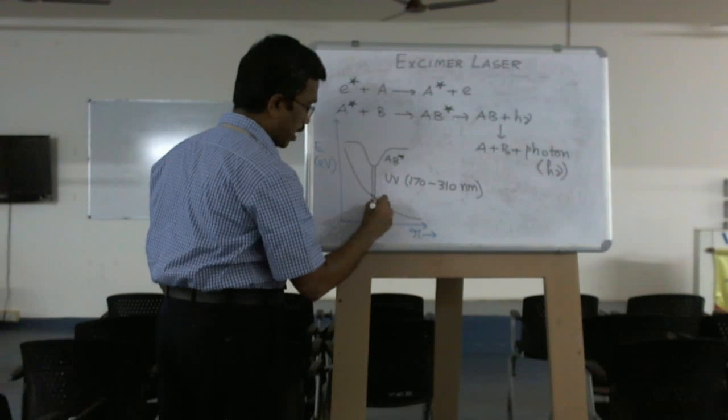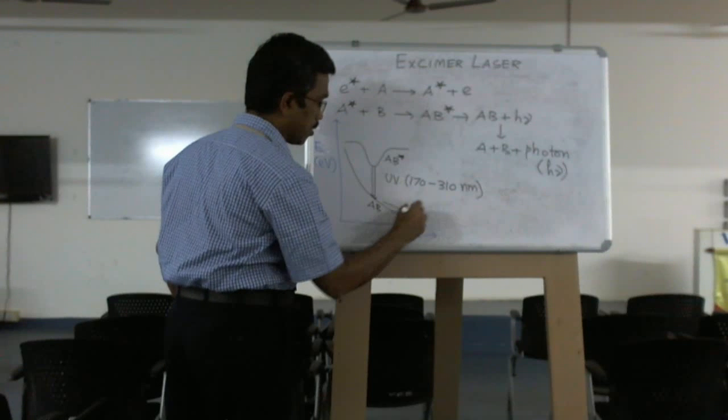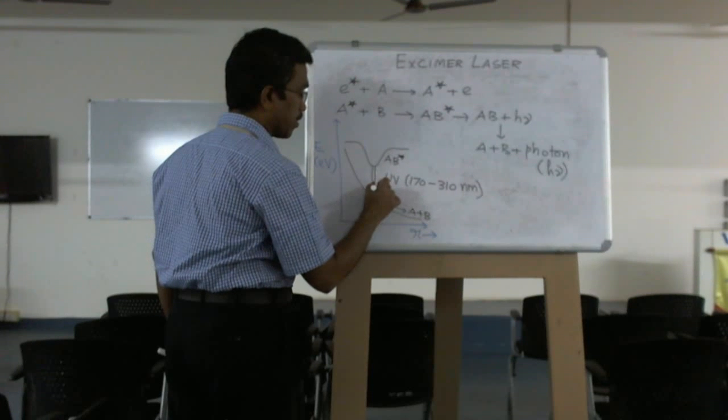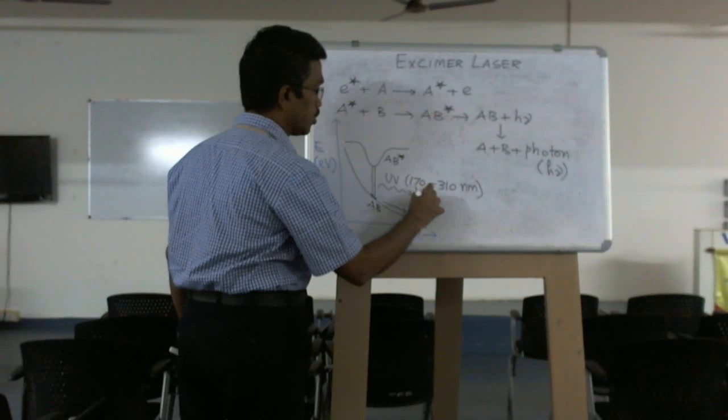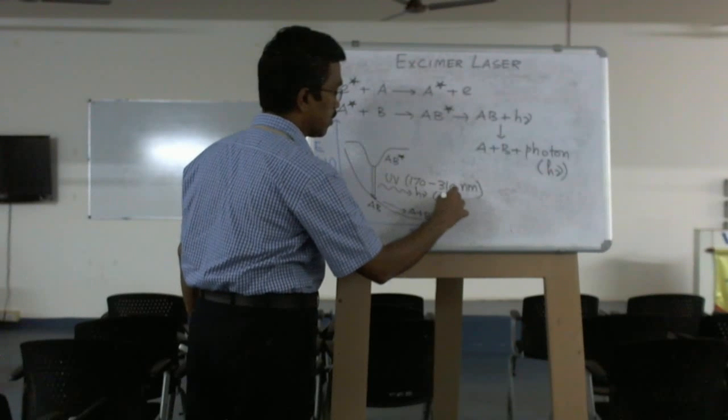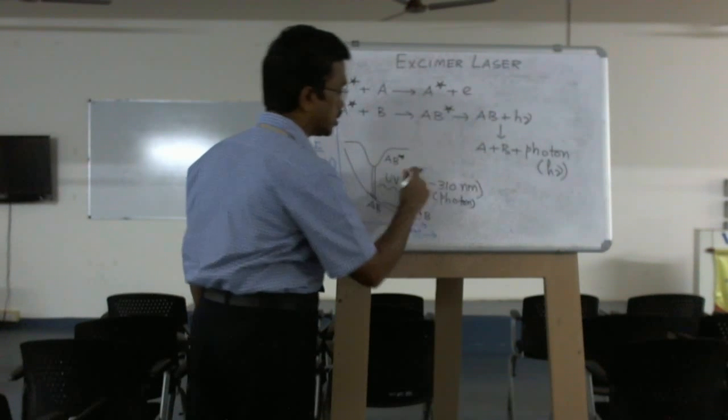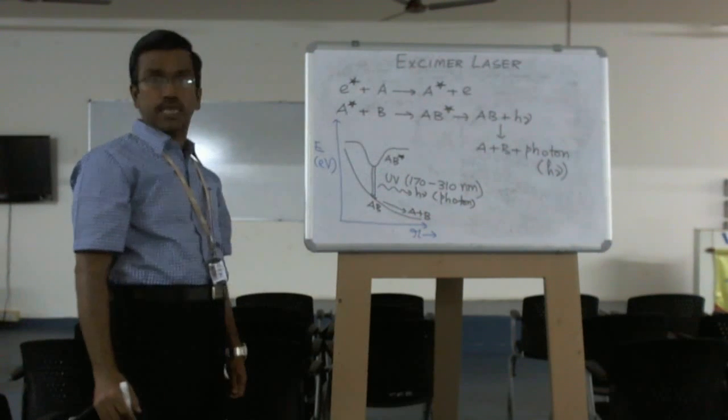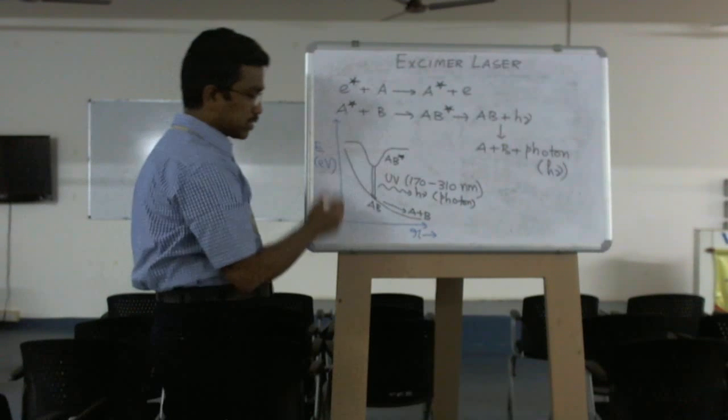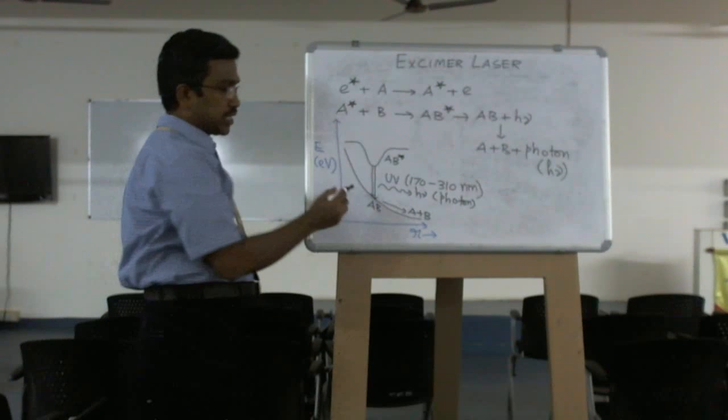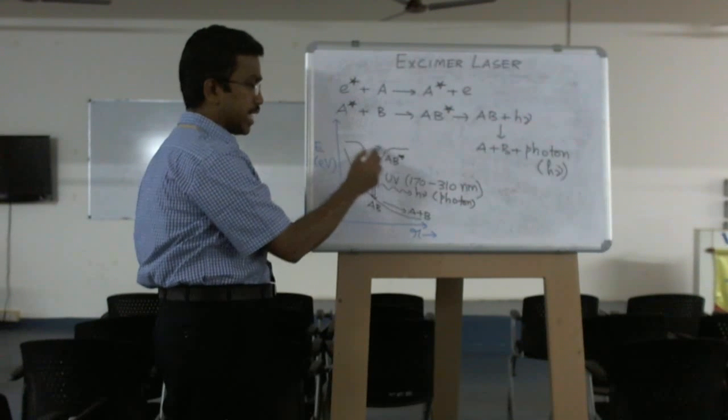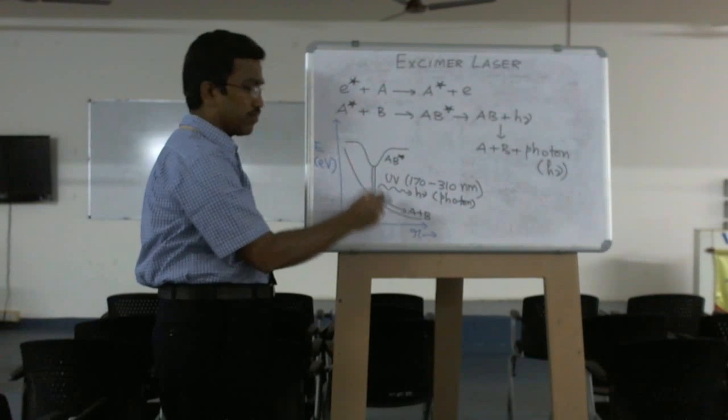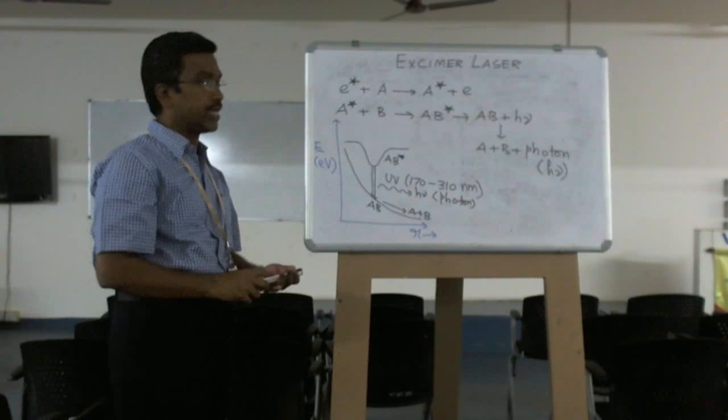Then you come to AB. Once again, it will become A plus B. Here we are getting the output, which is photons. We are getting wavelengths in the range of 172 to 300 nanometer. This is the energy level diagram for any excimer laser. We can call this a potential energy curve for excimer laser. This is the ground state, and this one is the excimer state. Excimer state will have a minimum - that is, dimers will get a minimum, and monomers will not get a minimum. This is the principle of the excimer laser.